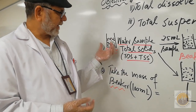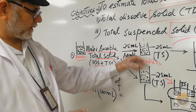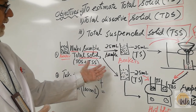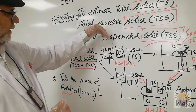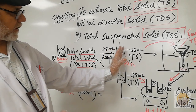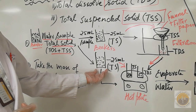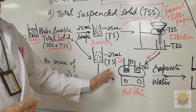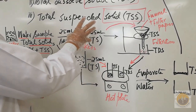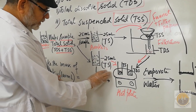From the sample we take 25 ml into two different beakers, which we have already weighed so we know the mass of each empty 100 ml beaker. One beaker is for TS and the other for TDS. Both start with the same 25 ml sample containing TDS plus TSS.